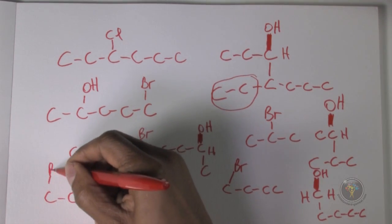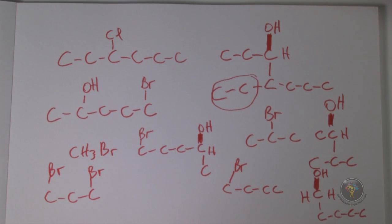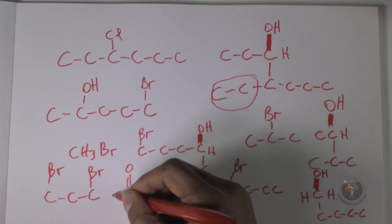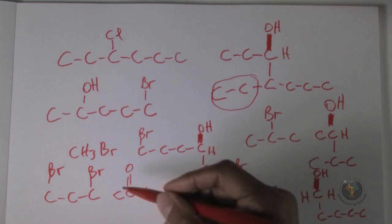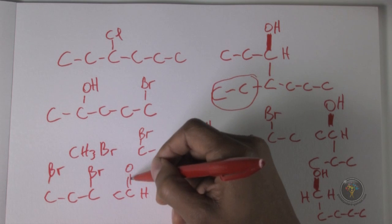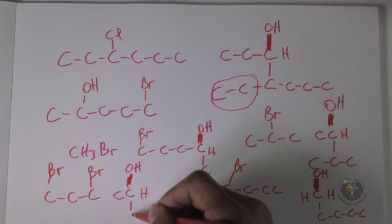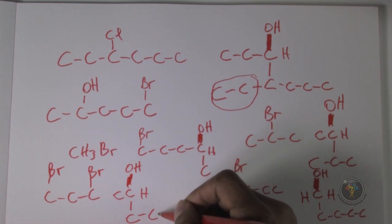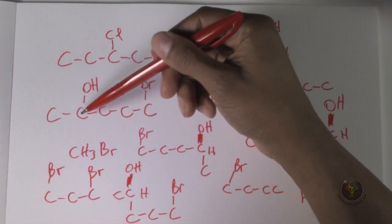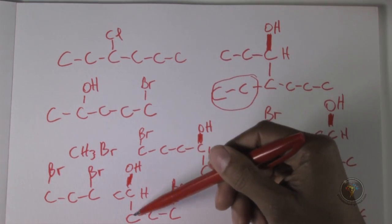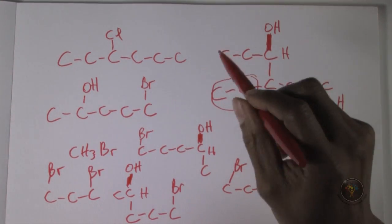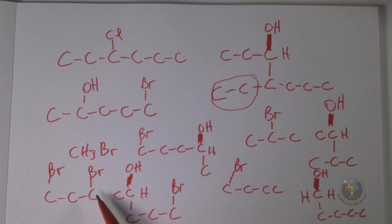Testing D: 1,3-dibromopropane plus acetaldehyde (ethanal). One bromine end becomes delta-negative via Grignard, attacks the carbonyl carbon, electrons go up to OH. Flipping the structure gives carbons with bromine at the far end — checking: 1-2 hydroxy at position 2, bromine at the end, 5 carbons total. Matches exactly. So both A and D produce the target compound.